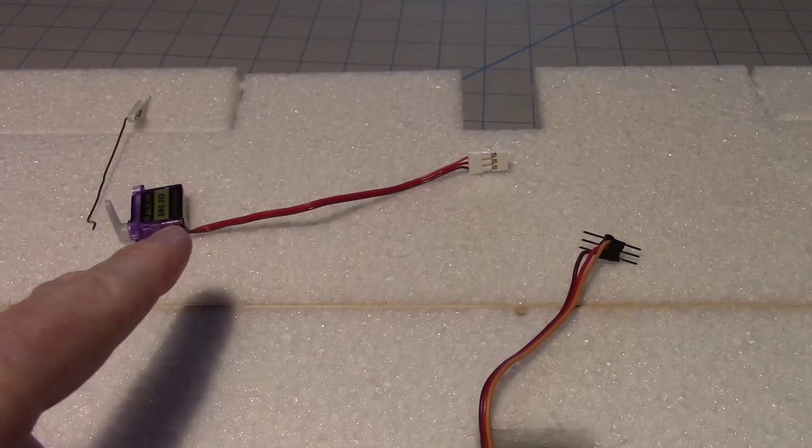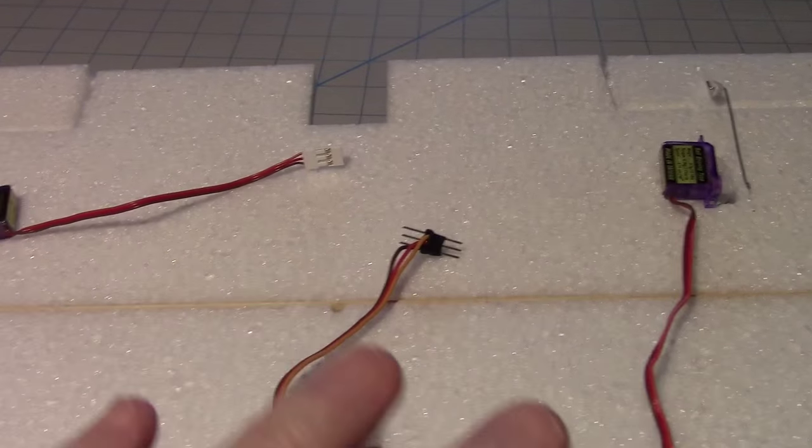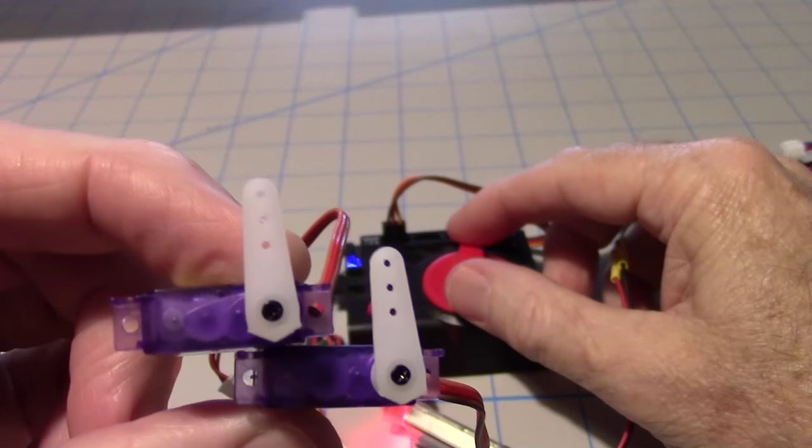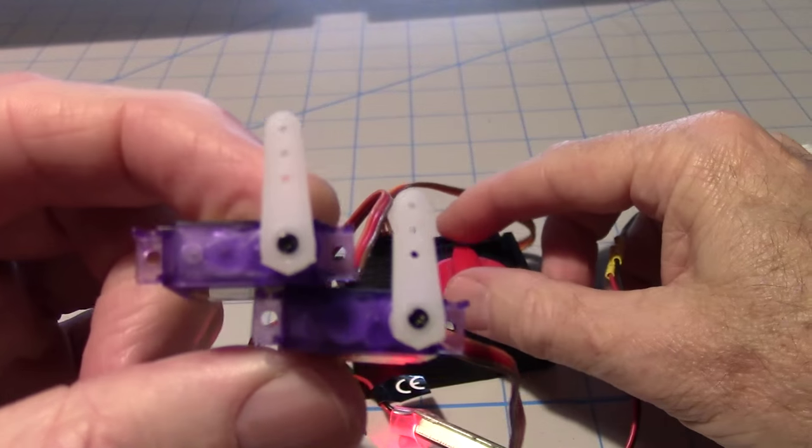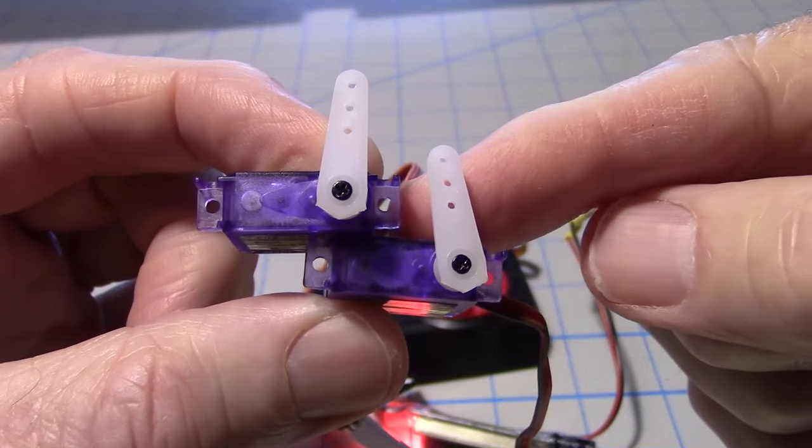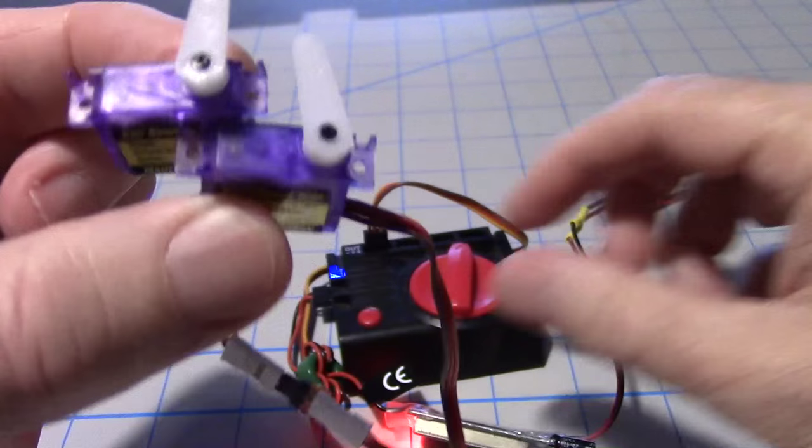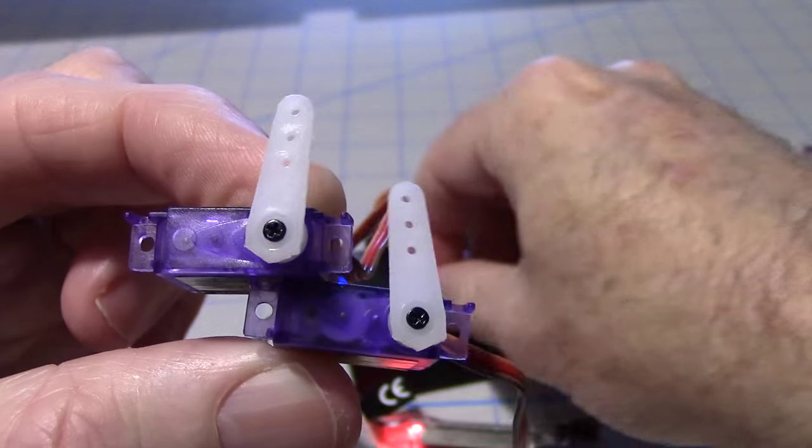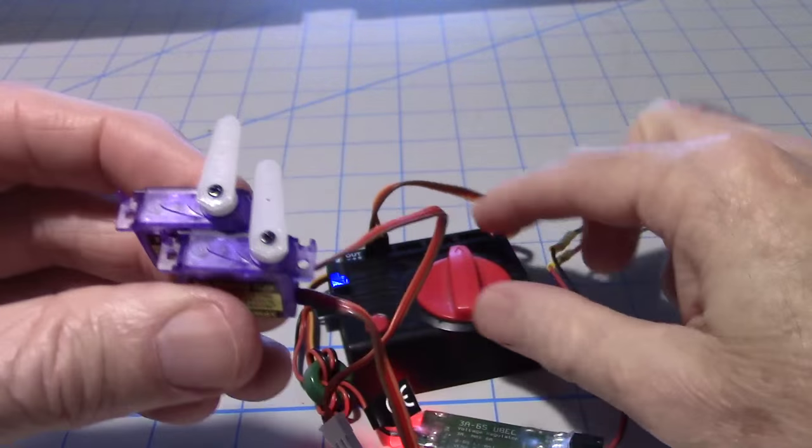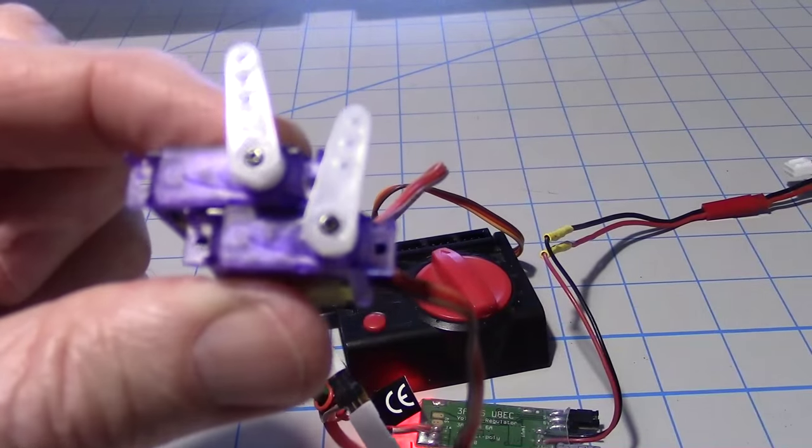With the Y harness, you normally have one servo facing one way and one facing the other. But I ran into a snag. When I move the servo tester, they go opposite directions. These are supposed to be the same servo, same part number, ordered at the same time from the same manufacturer, yet they're backwards. I've never seen this happen before. I'm going to have to compensate for that.